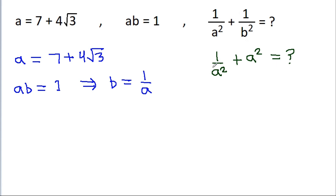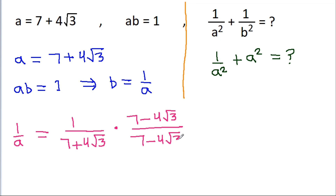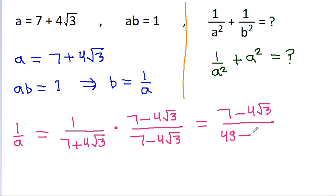So we have to find the value of 1 by a square plus a square. We can get 1 by a: since a is 7 plus 4 root 3, 1 by a will become 1 by 7 plus 4 root 3. If we multiply it with 7 minus 4 root 3 over 7 minus 4 root 3, then using the identity (a+b)(a-b) = a² - b², we get 7 square is 49 minus 4 root 3 square is 48, giving 1 by a equals 7 minus 4 root 3.